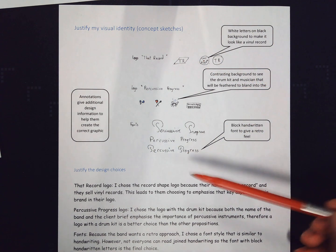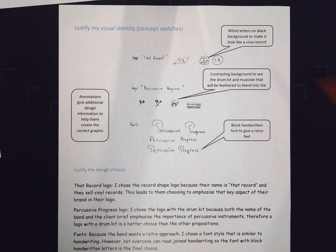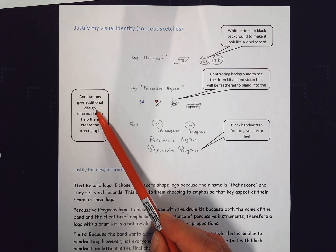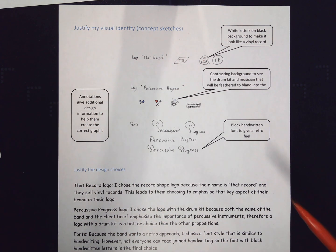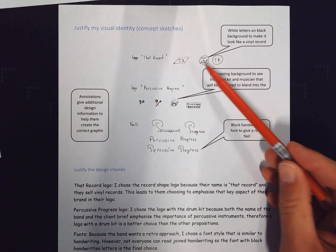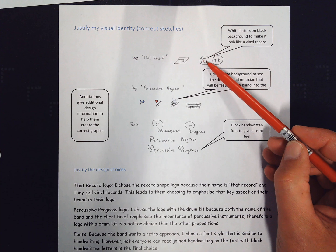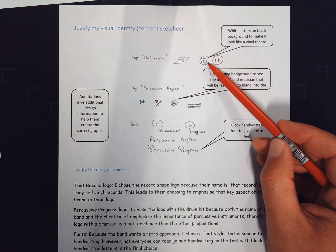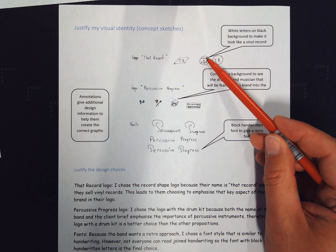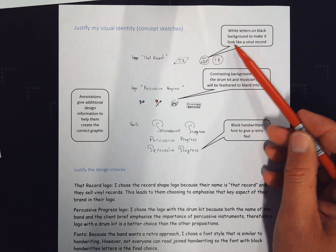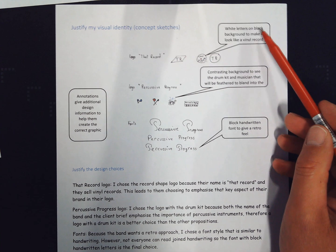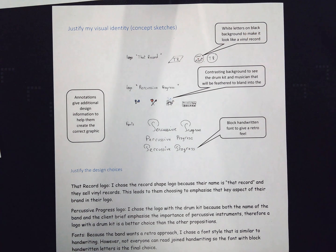So you've created your concept sketch, you've annotated your concept sketch with additional information to help the graphic artist create the image exactly the way you want it. For example, here this one, what I really want, this is meant to be a vinyl record, so instead of black text on white background, we want it to be black background with white letters on it.